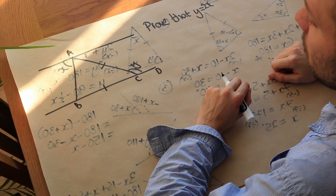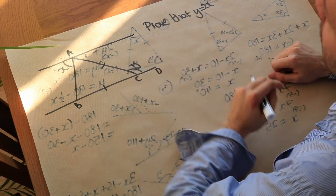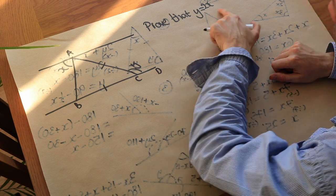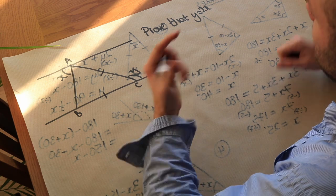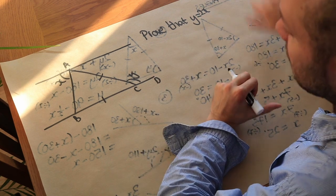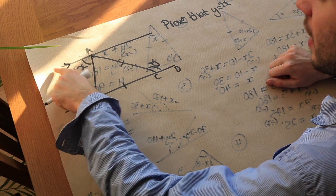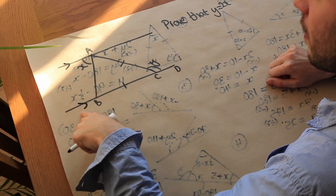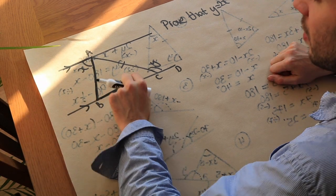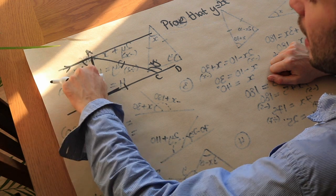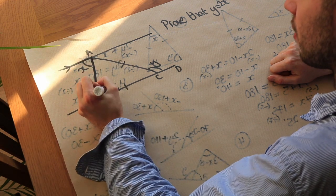For this last question, we want to do a full geometric proof showing that y equals 2x. A proof is a sequence of statements that justifies what you're trying to prove. We have parallel lines, so we can use alternate angles — the Z shape shows angle ABC equals x, as alternate angles are equal.